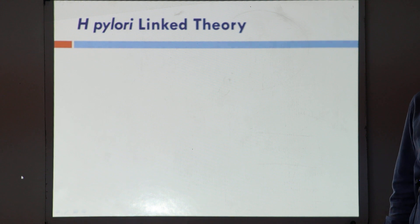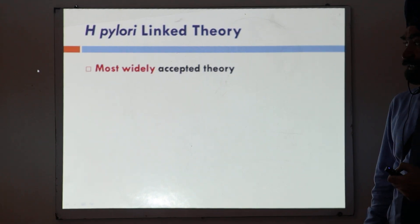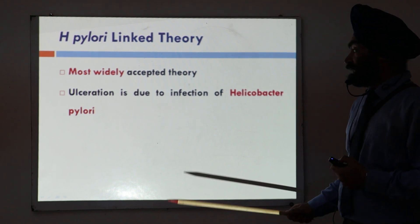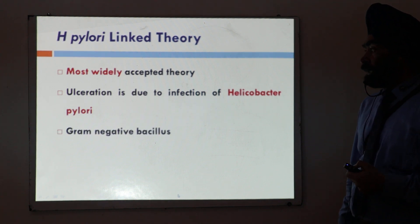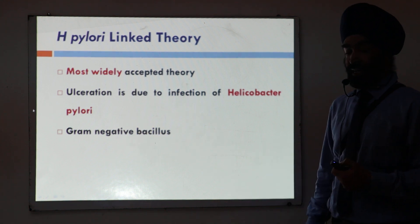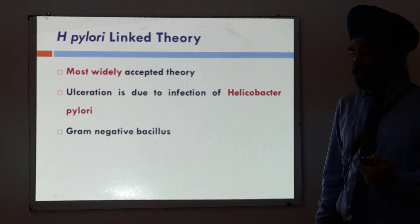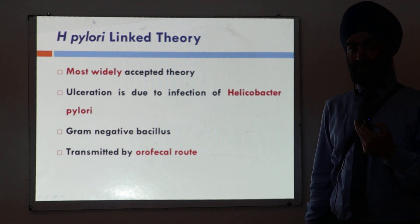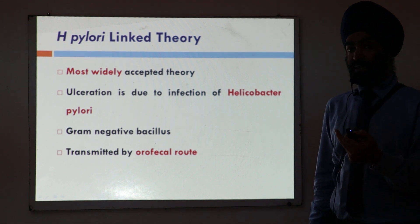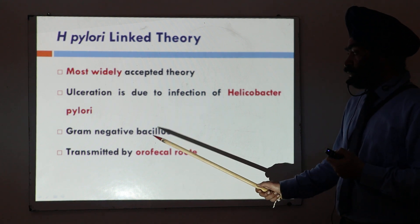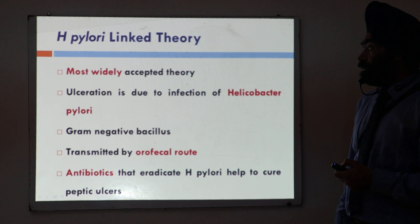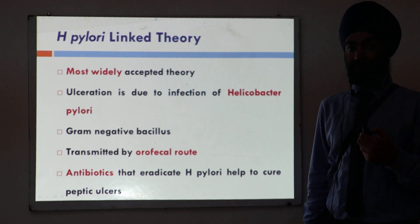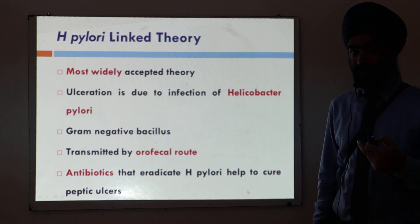The third theory, the H. pylori linked theory, is most widely accepted nowadays. It says that ulceration is caused by a bacterial infection — the bacteria is called Helicobacter pylori, or H. pylori. This bacteria is gram-negative in nature and bacilli, meaning it is rod-shaped in structure. It is transmitted by the oral-fecal route, meaning contaminated food is the most common route of transmission. Supporting evidence for this theory is that giving antibiotics which eradicate H. pylori also eradicates ulcers for a very long period of time, sometimes permanently.